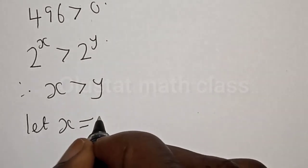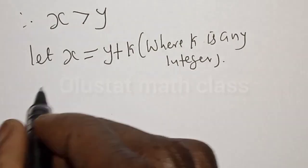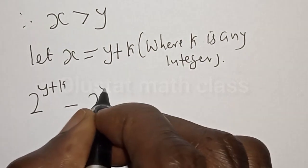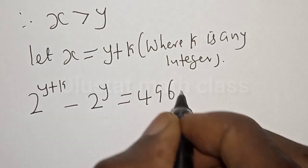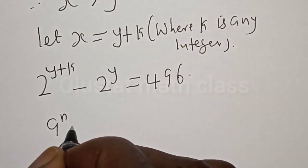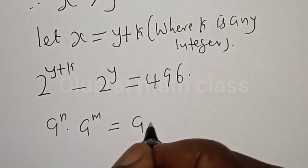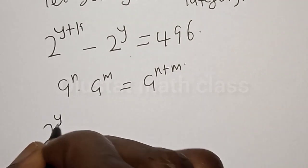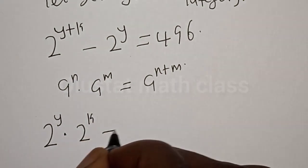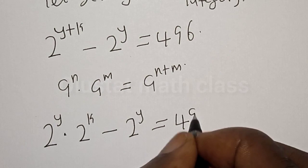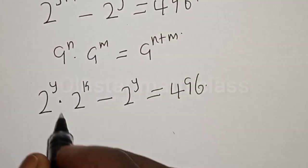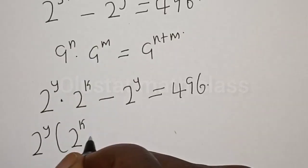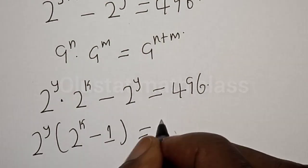Let x equal y plus k. We now substitute for x. That is, we have 2 raised to power y plus k, minus 2 raised to power y, is equal to 496. Remember, 2 raised to power y plus k equals 2 raised to power y multiplied by 2 raised to power k. So we have 2 raised to power y, multiplied by 2 raised to power k, minus 2 raised to power y, is equal to 496.